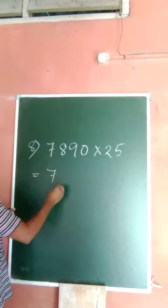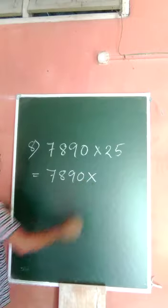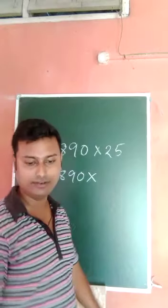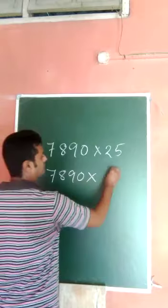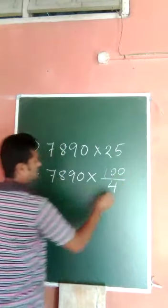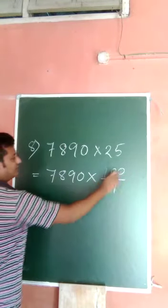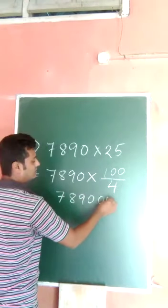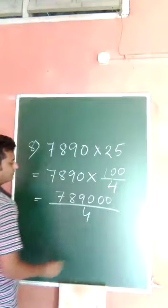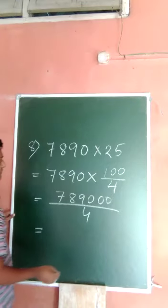So question number eight is 7890 times 25. You can write 100 by 4. So this one, now this one is multiplying with this: 789000 divided by 4. Okay, so you have to do the rough work.